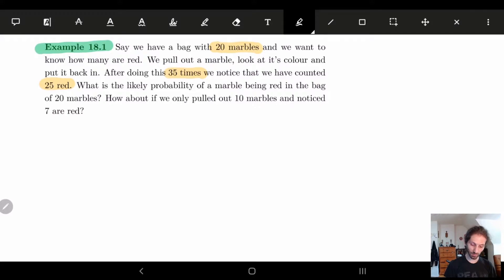So we're trying to calculate the probability of the things being red. And then we're going to redo this if we pulled out 10 marbles and 7 are red. So let's look at this.